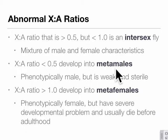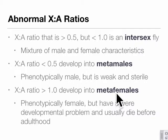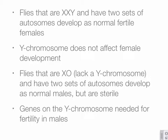If the X-to-A ratio drops below 0.5, you get metamales — they look male but are weak, sterile, and usually die. If the ratio exceeds 1.0, you get metafemales — they look female but have developmental problems and usually die. The molecular basis of this counting mechanism ultimately relates to the sex lethal gene. The sex lethal protein is only produced in females when the ratio is 1.0. Sex lethal then turns on expression of genes called transformer and double sex; males lack sex lethal because it's not made when the ratio is 0.5.